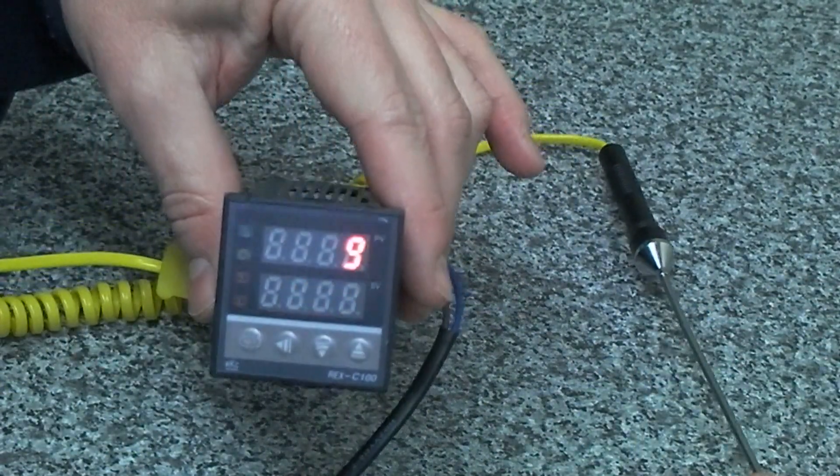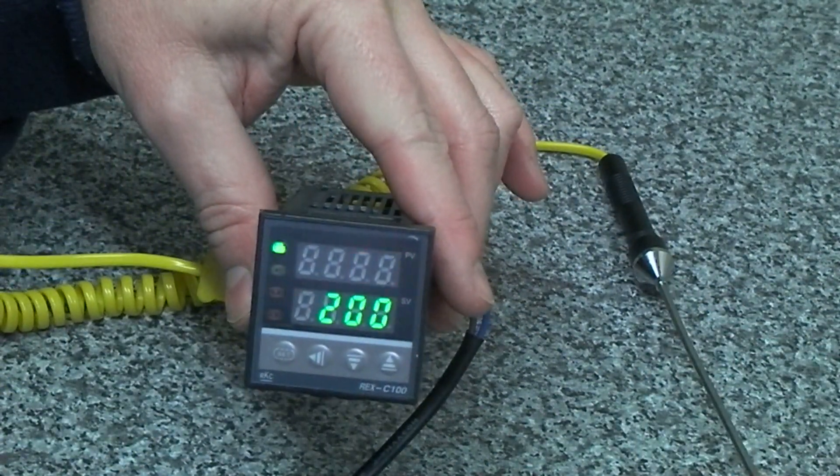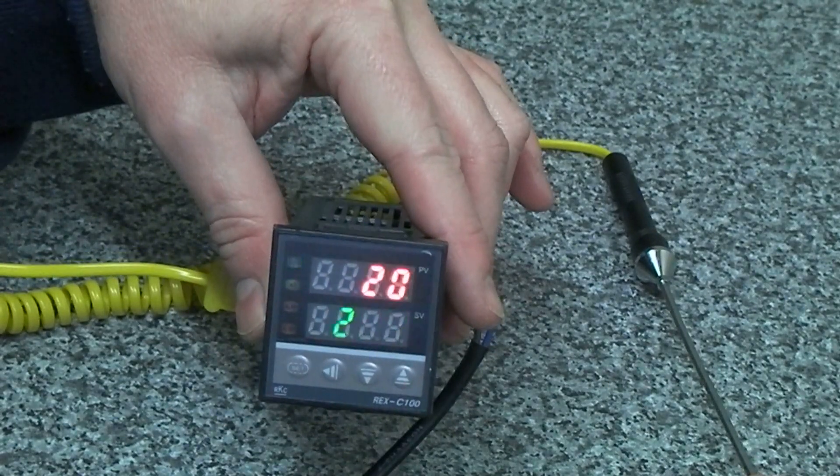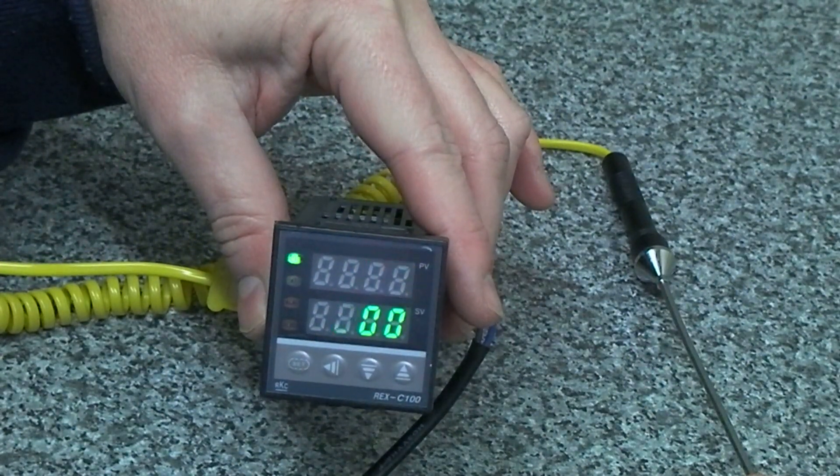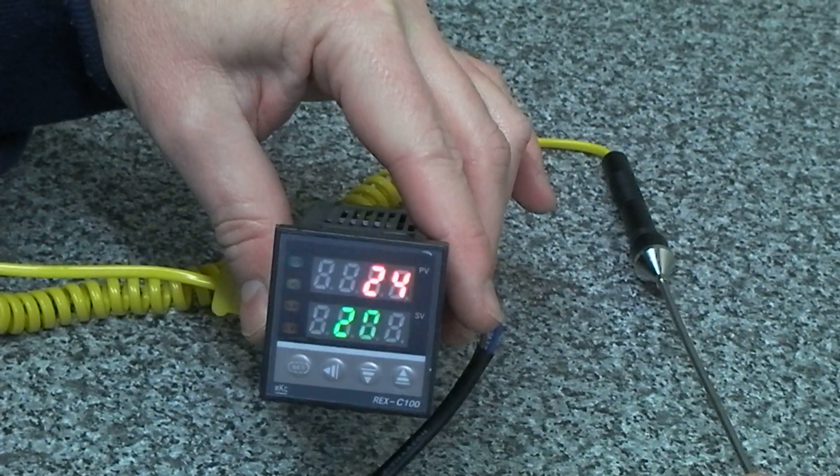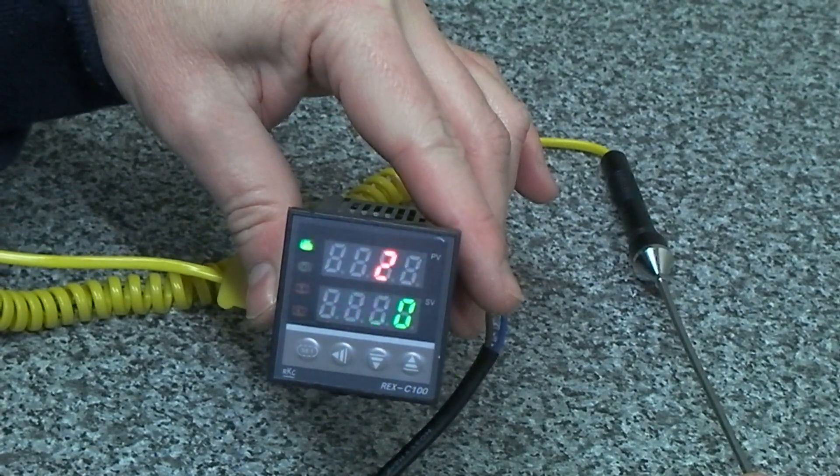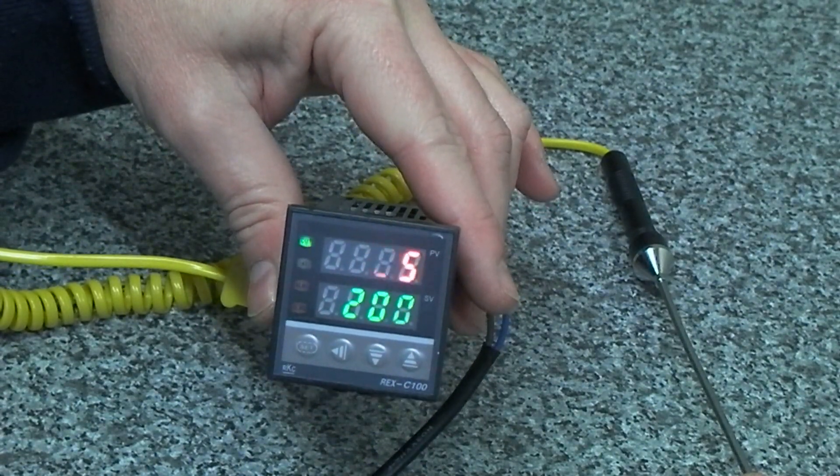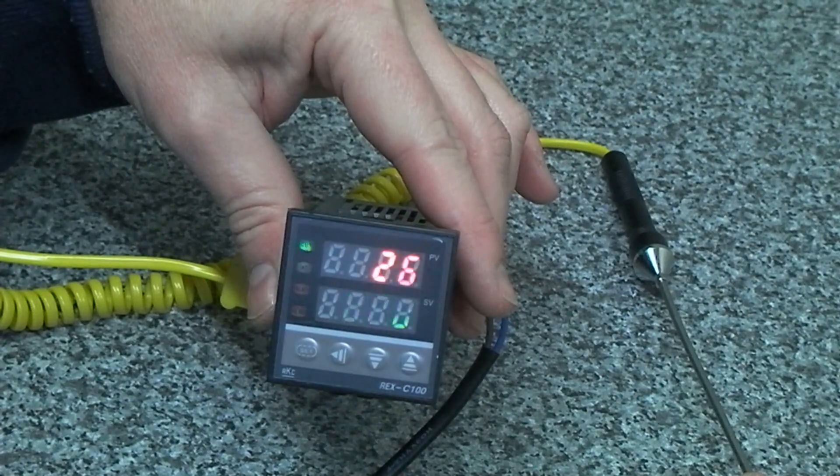If I just hold the end of the thermocouple, you will see that starts to climb. If that reached 200 degrees, then you would hear the relay click and that would remove the power to the heating element.